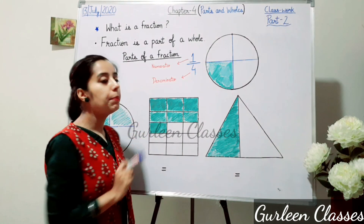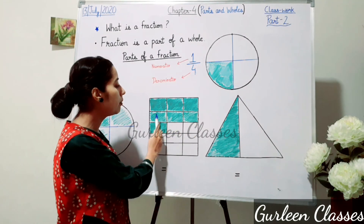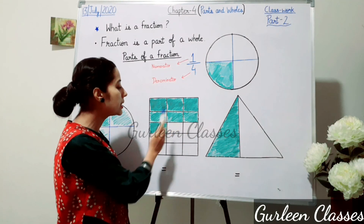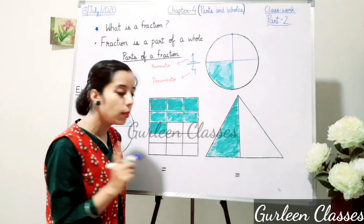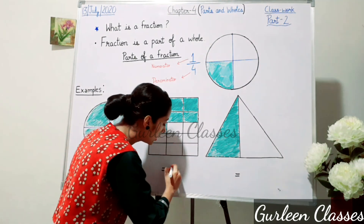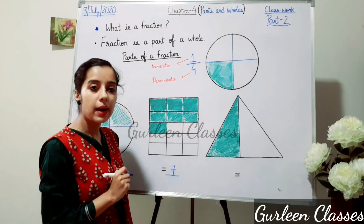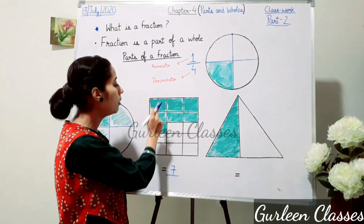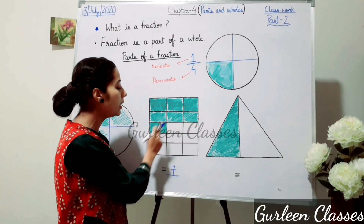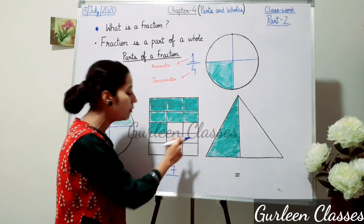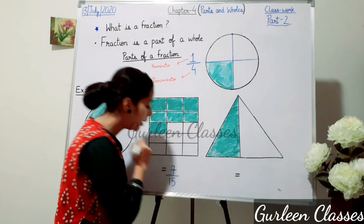Next, how many parts are shaded? 7 parts are shaded, so 7 is written in the numerator. How many total parts are there? 15. So write 15.